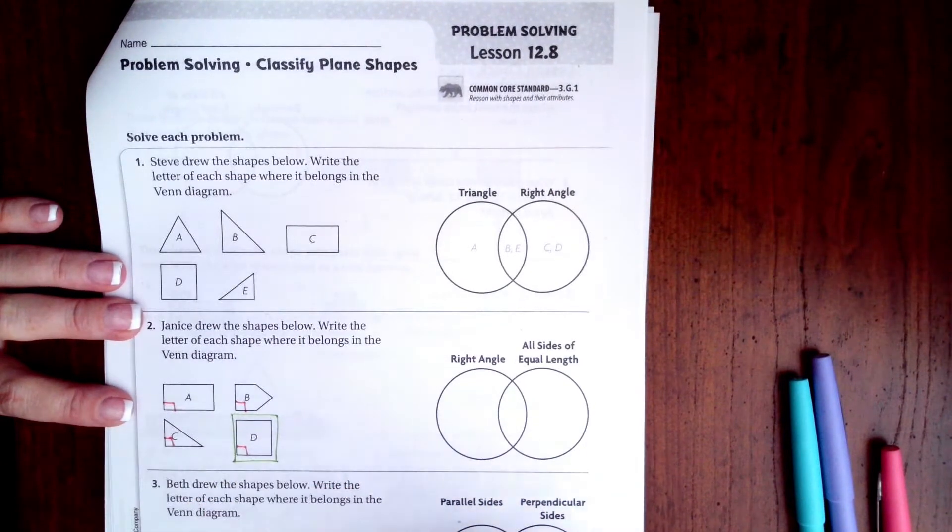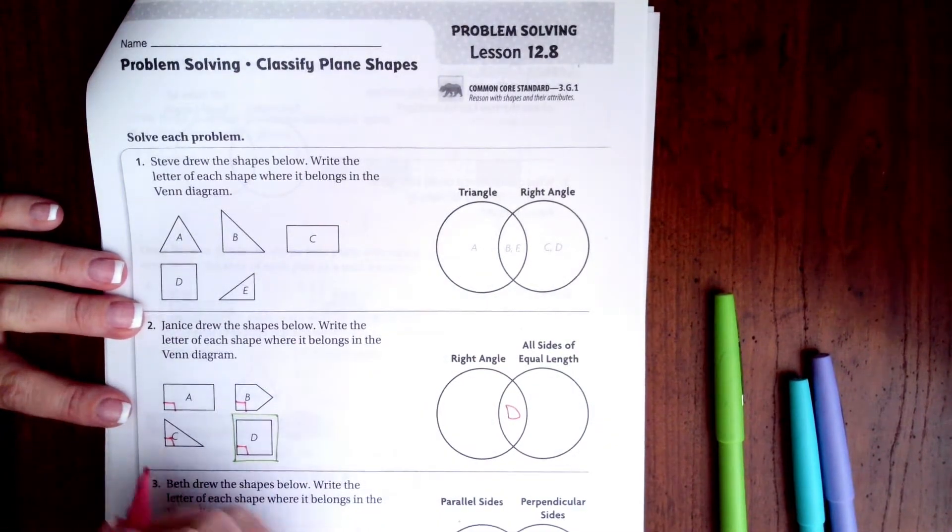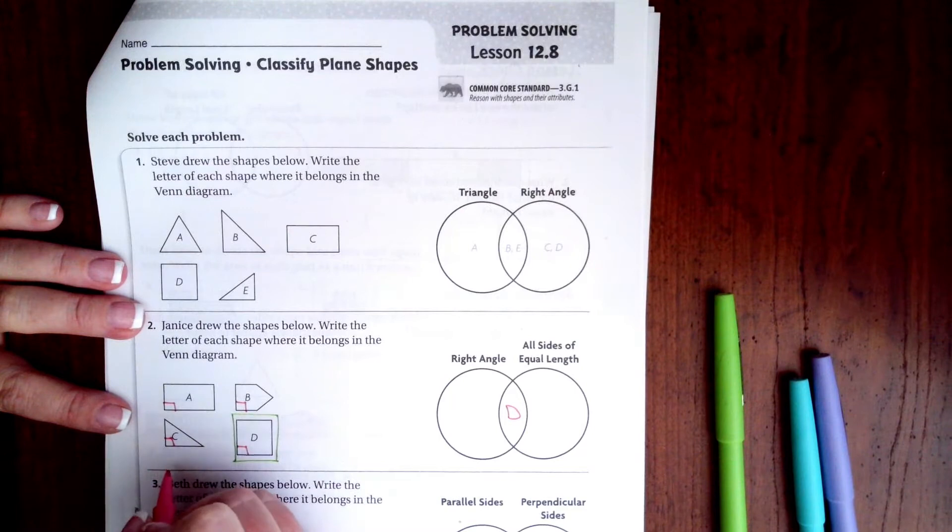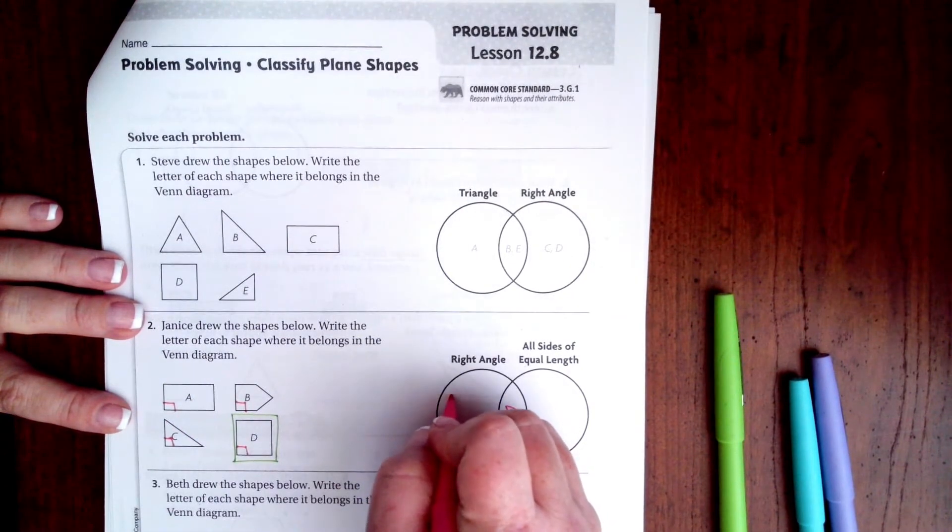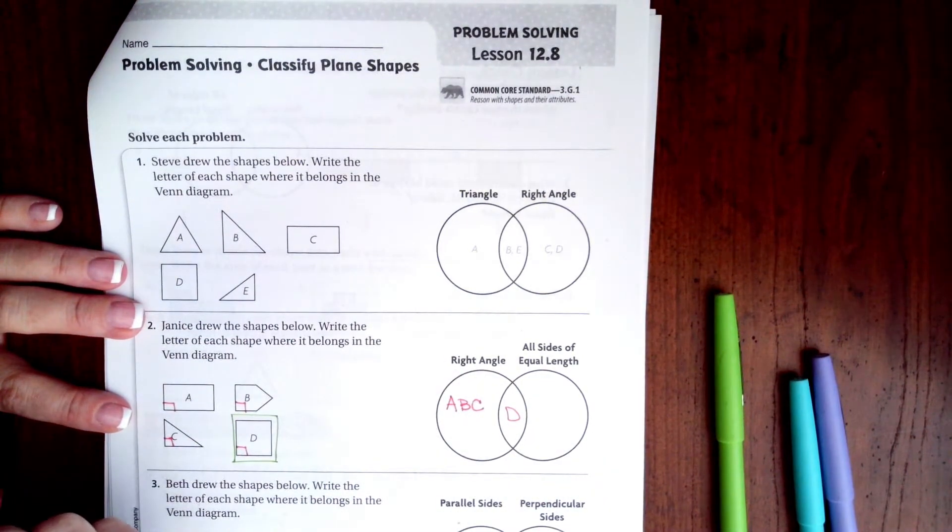It has a right angle, so D is going to go right here in the middle. The other ones, the sides are all different sizes, so they're going to go on this side. A, B, and C on this side.